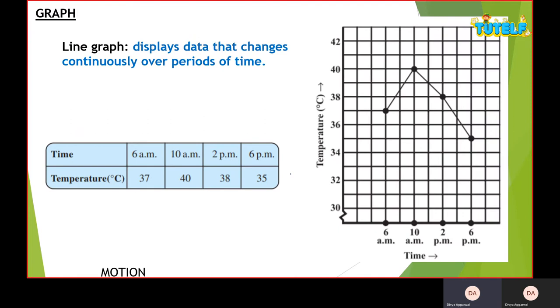The last one we're going to study is the line graph. This line graph displays data that changes continuously over periods of time. For example, let's say a person fell sick and his doctor maintained a record of body temperature taken every four hours - 6 a.m., 10 a.m., 2 p.m., then 6 p.m.